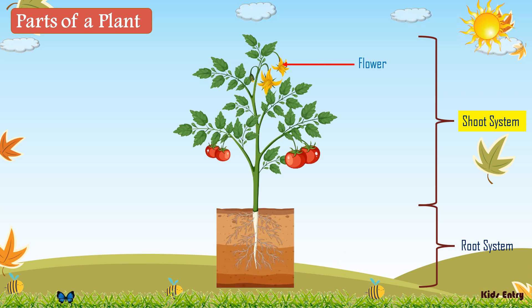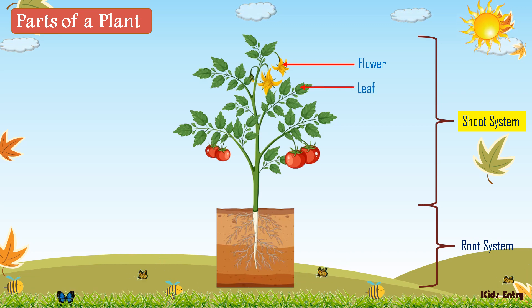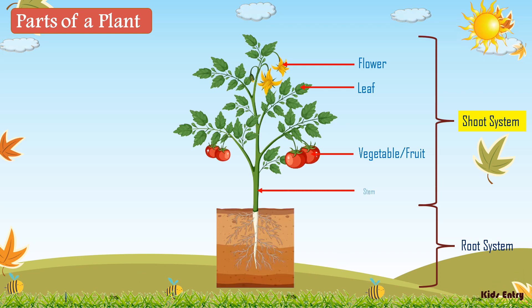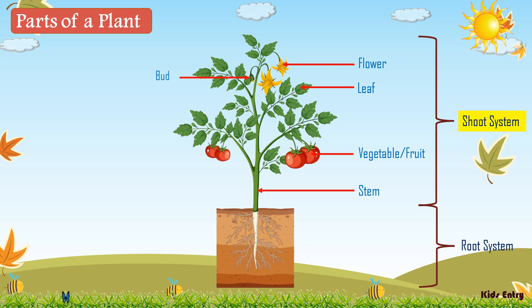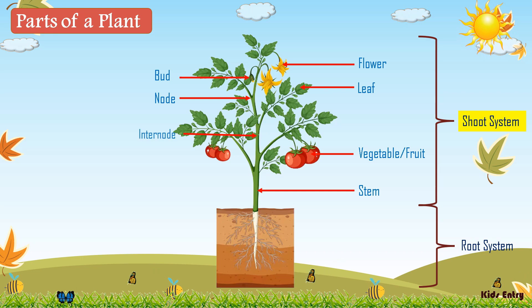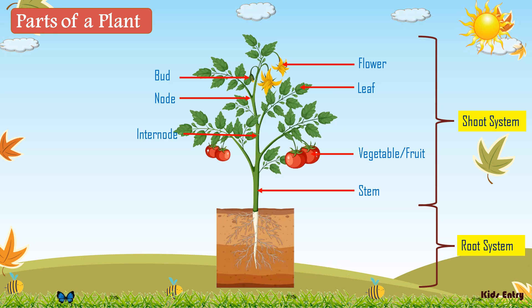The parts of the shoot system are: Flower, Leaf, Vegetable or fruit, Stem, Bud, Node, and Internode. Now let's see the parts of the root system.